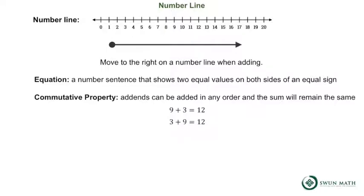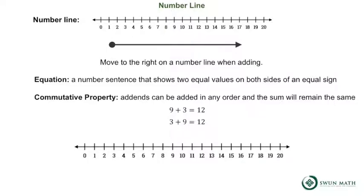Let's show this on a number line. 9 is the first addend. Here's 9 on the number line. 3 is the second addend. We will jump 3 spaces to the right to find the sum. 1, 2, 3. 9 plus 3 equals 12.